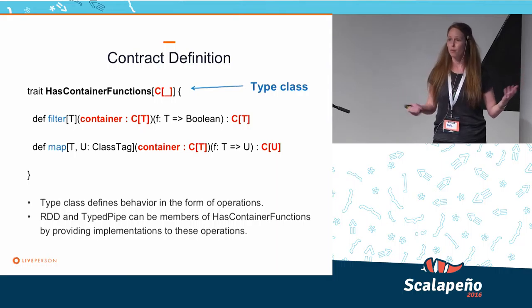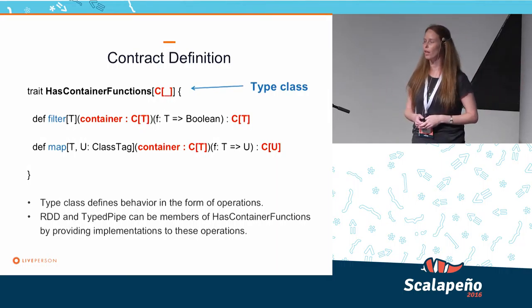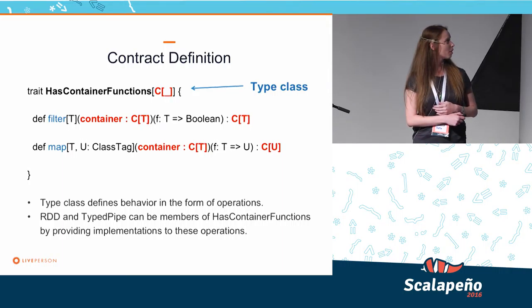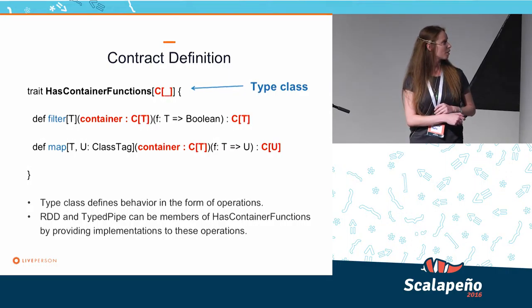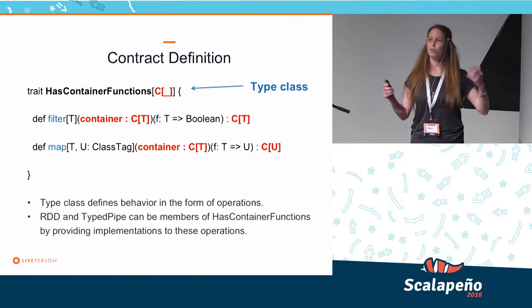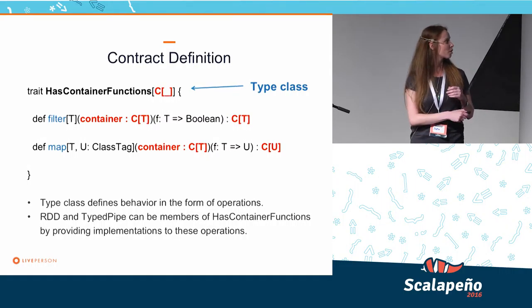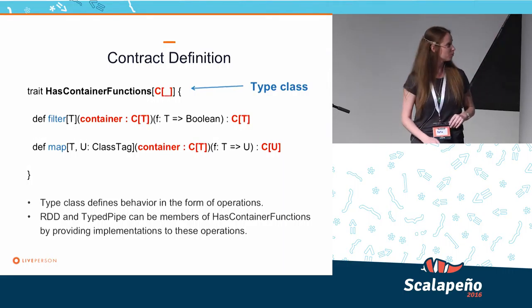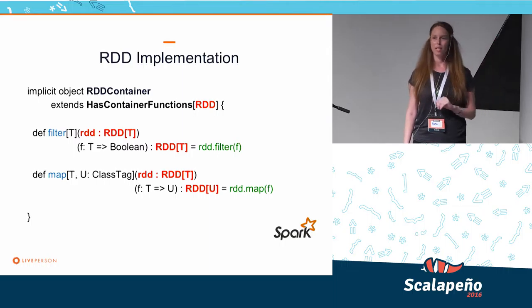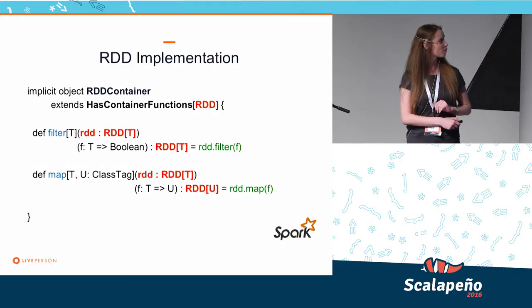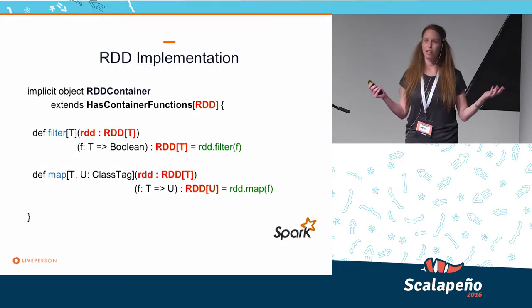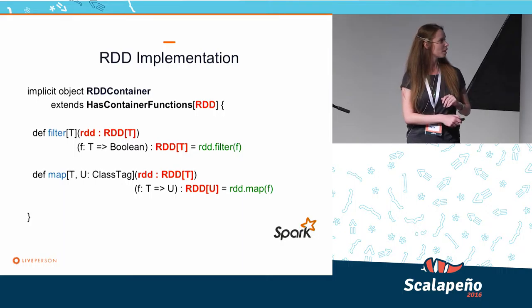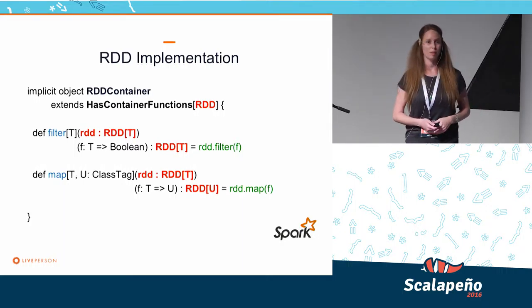HasContainerFunctions is a type class that defines the behavior and the operations we'd like to support — for example, filter and map. We get this container as input and the output is also a container, and map has the same behavior. So if we implement these functions for RDD and TypedPipe, we can use them in our word count — and of course, word count is an example for some very complicated logic that you can have. This is an example implementation for an RDD container, where we just implement those two functions. It's very easy since RDD also has filter and map, so the implementations are really straightforward, but they can be something a bit more complex as well.